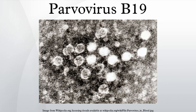Erythroviruses belong to the Parvoviridae family of small DNA viruses. It is a non-enveloped, icosahedral virus that contains a single-stranded linear DNA genome. Approximately equal proportions of DNA of positive and negative sense are found in separate particles. At each end of the DNA molecule there are palindromic sequences which form hairpin loops. The hairpin at the 3' end serves as a primer for the DNA polymerase.